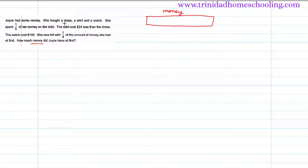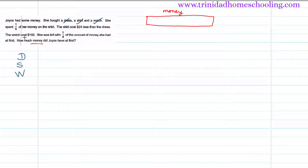Now let's look at how she split this money. She bought a dress — let's use D for dress, S for shirt, and W for watch. Was the money spent on anything else? A dress, a shirt, a watch, and she had some left over. So let's use R for remainder.